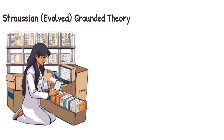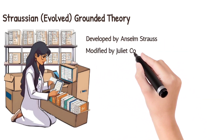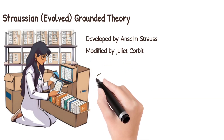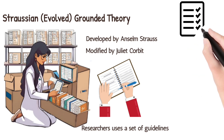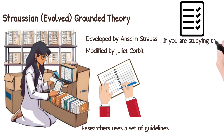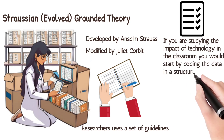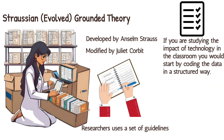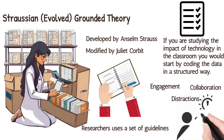Next, we have Straussian grounded theory, developed by Anselm Strauss and later modified by Juliette Corbin. This approach is more structured. Researchers use a set of guidelines to analyze data, including coding and defining categories early in the process. For example, if you're studying the impact of technology in the classroom, you would start by coding the data in a structured way. You might break down the data into categories like engagement, collaboration, and distraction, and use these categories to form your theory about how technology affects learning outcomes.